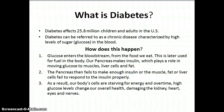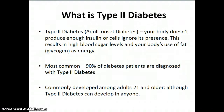As a result, our body cells are starving for energy, and over time, high glucose levels change our overall health, damaging the kidney, heart, eyes, and nerves. Although type 1 and type 2 diabetes have similar effects, type 1 is much more severe.